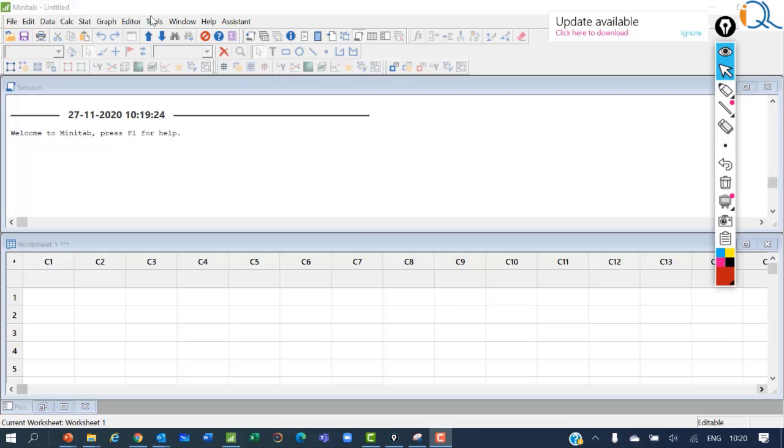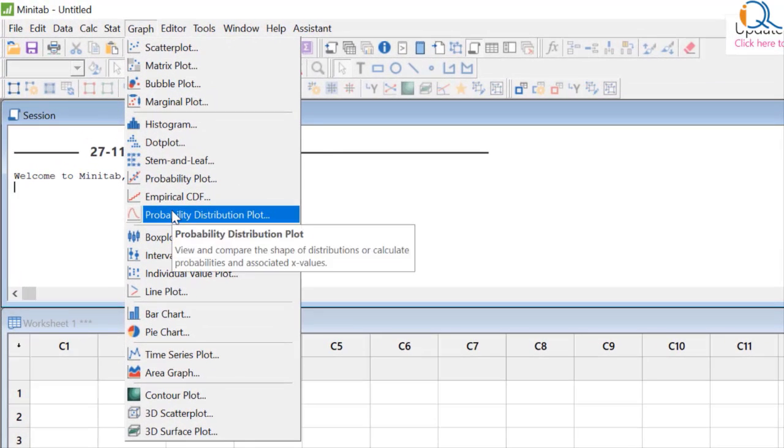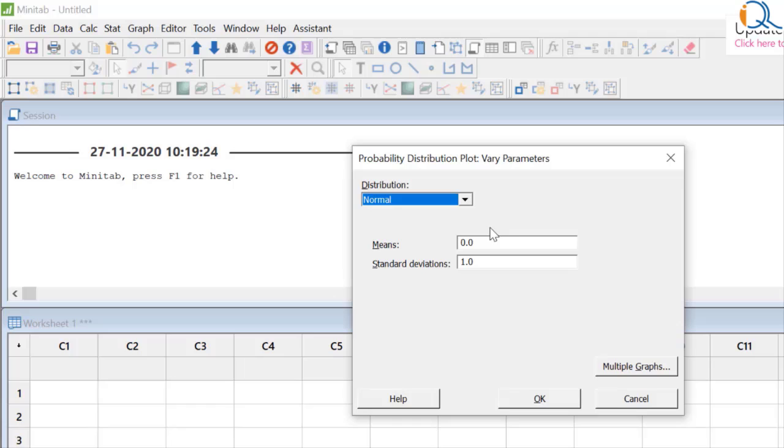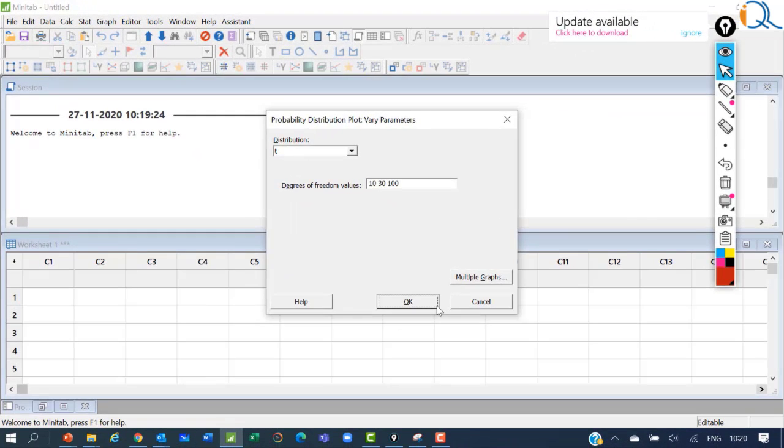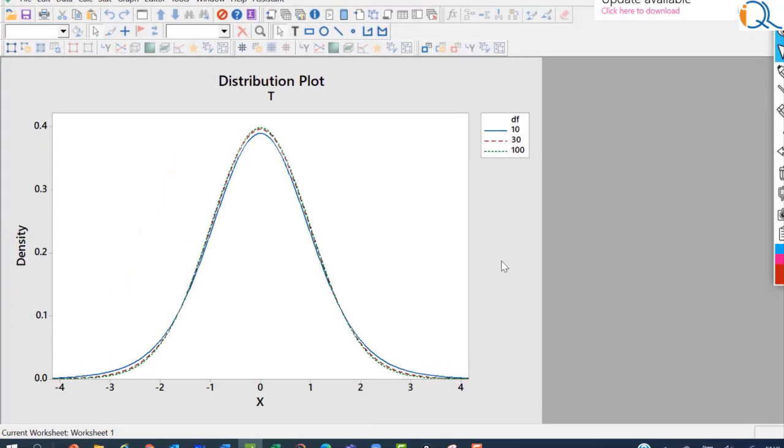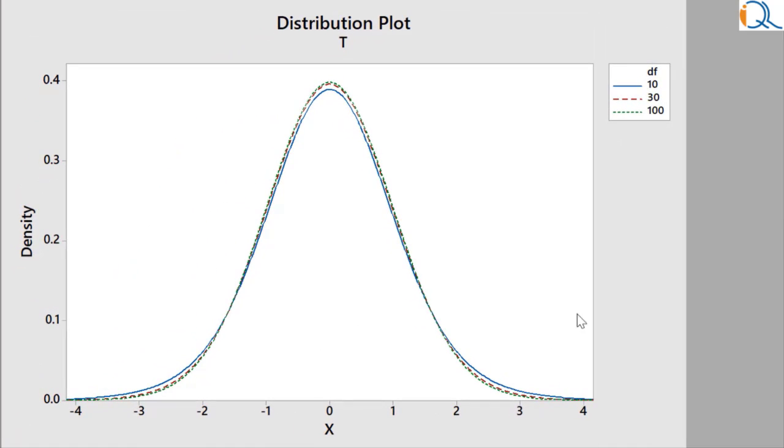So let us now increase the degrees of freedom more than 30 also. So we will compare degrees of freedom. So I will go to the same command again and I select vary parameters and then T distribution. And then I select degrees of freedom as 10, 30 and 100. 100 is very large and it will be probably something like a normal distribution only. So now I can see the three distributions. There is a fair amount of difference between 10 and 30 degrees of freedom. But the difference between 30 and 100 is barely visible.